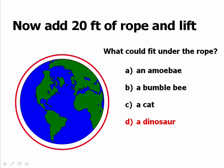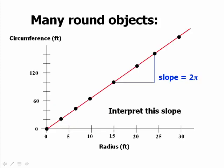Now I know what many of you are thinking. You're thinking 20 feet of rope is negligible compared to the distance around the entire earth. It can't possibly be a dinosaur, it has to be an amoeba. Well, let's go back to that straight line graph which represented all round objects and let's interpret that slope of 6.28.